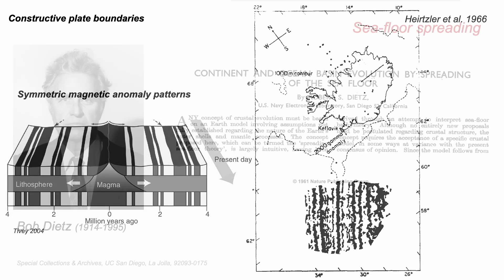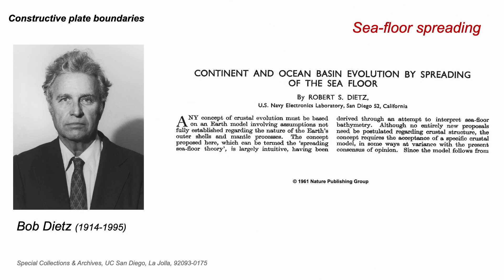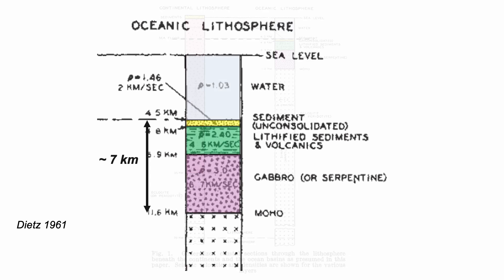We can step back to 1961 and Bob Dietz coining the term seafloor spreading. In this paper, he contrasted the typical crust of continents with that of the oceans. The numbers Dietz wrote on his diagram are the density and the velocity at which seismic waves are transmitted through the materials — information gained remotely by geophysical measurements. At the top is seawater, four to five kilometres of it. At the bottom is the mantle, and between is a crust of around seven kilometres thick — a thin veneer of sediments on top of igneous rocks, that's basalts and gabbro, known from a handful of dredged samples.